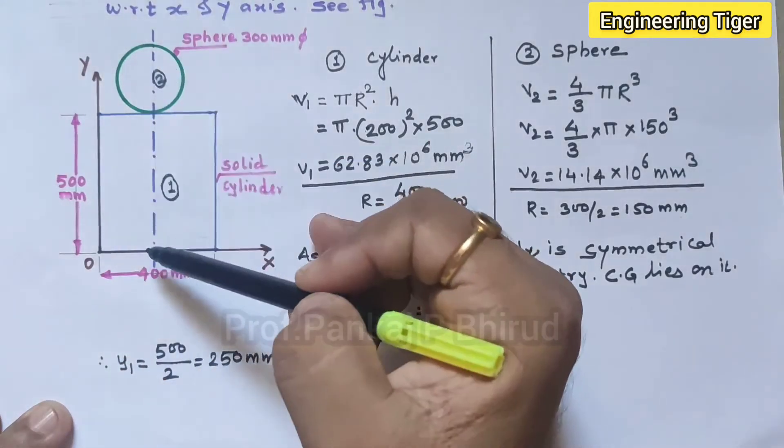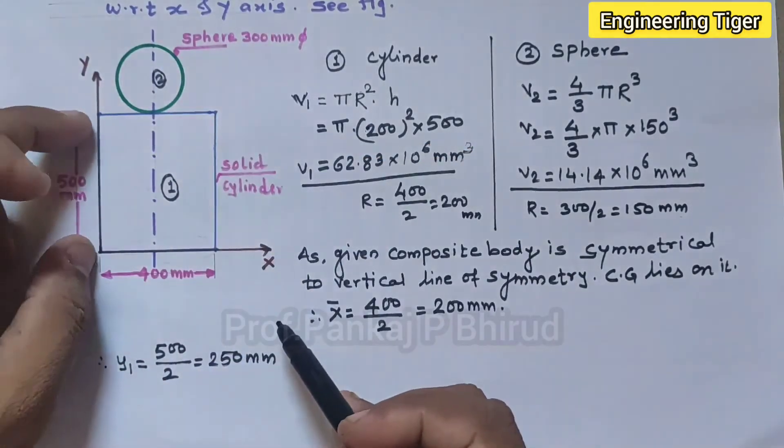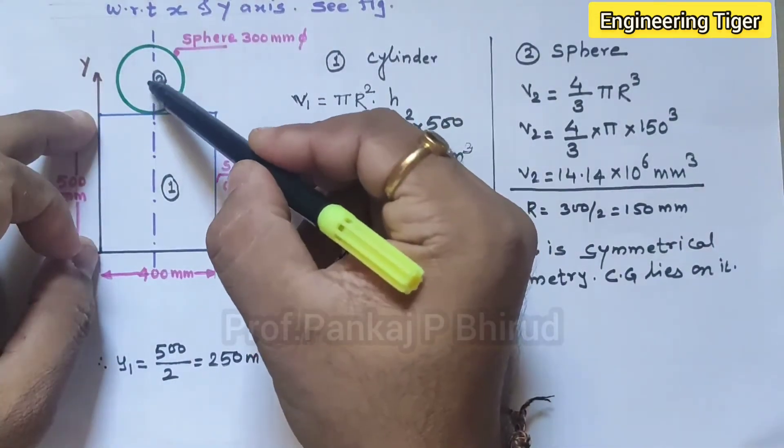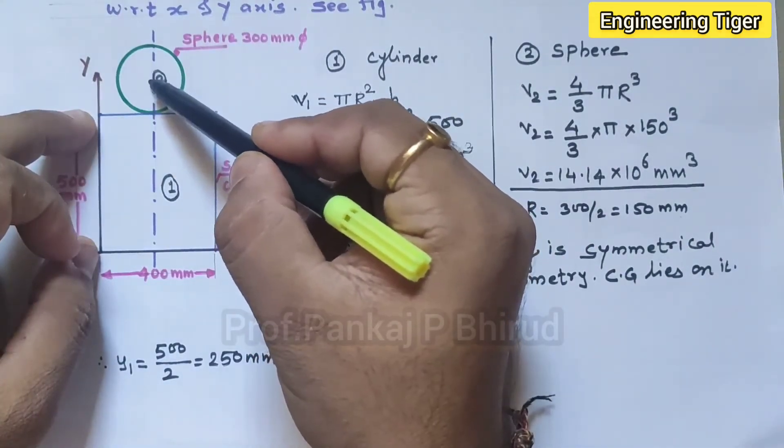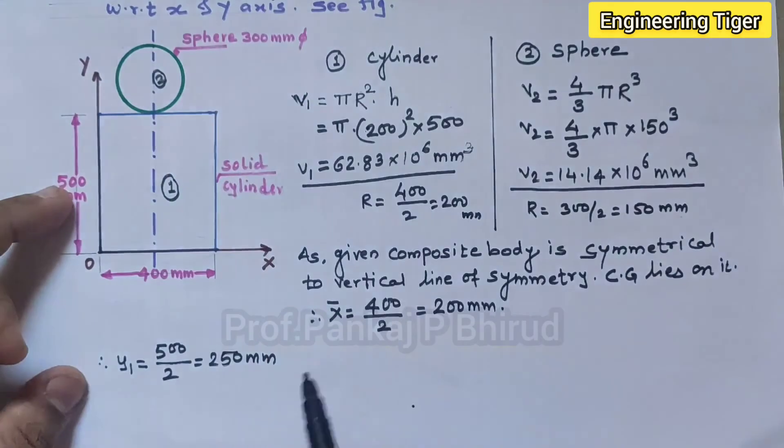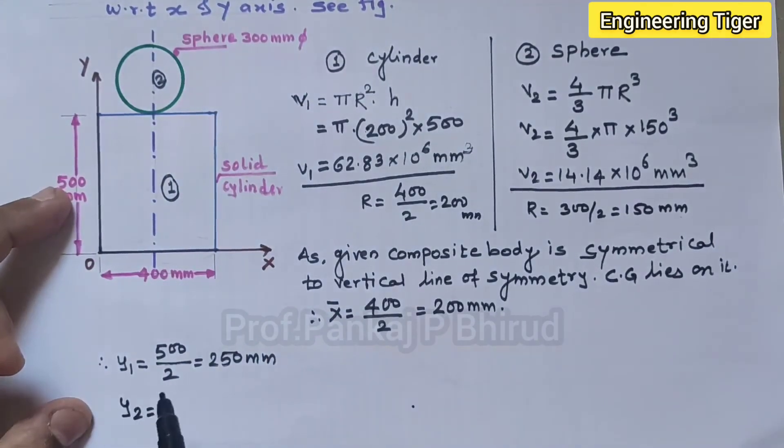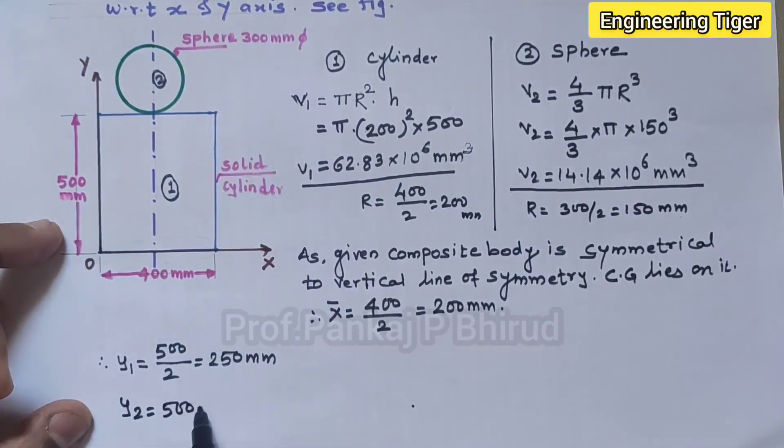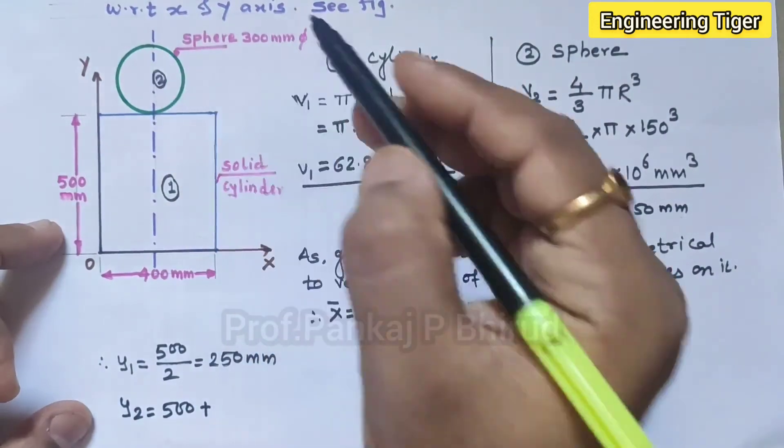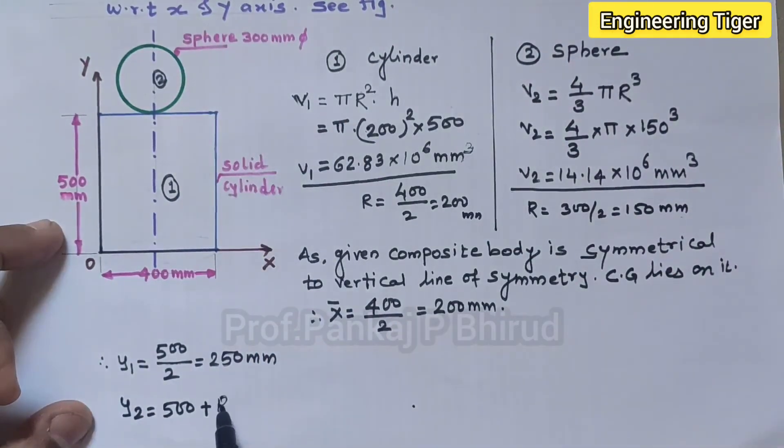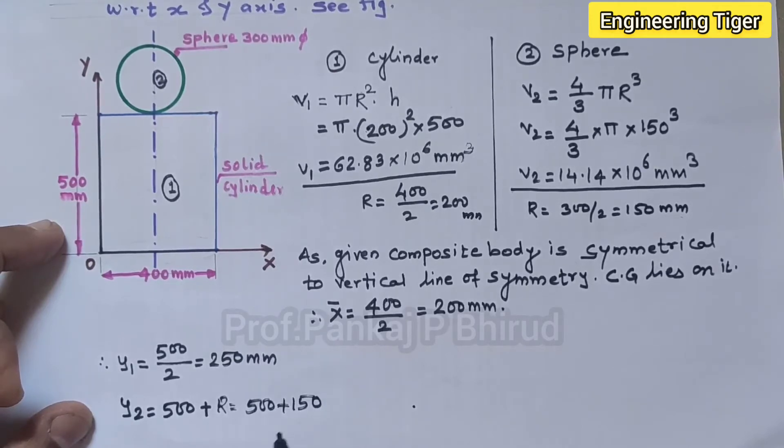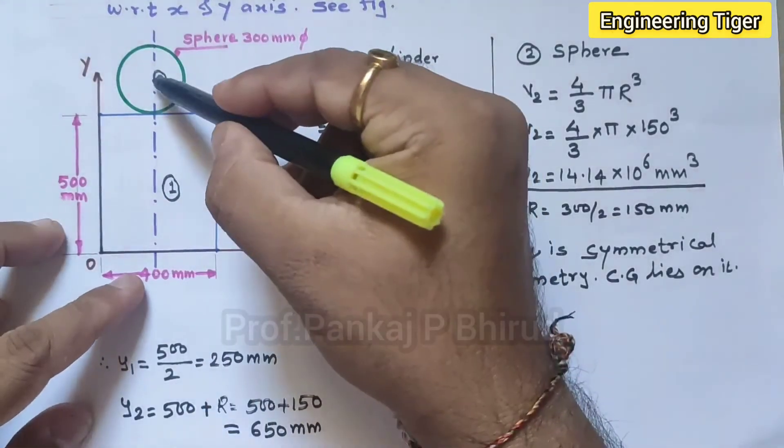Now calculate the vertical distance of CG of the sphere. This 500 is fixed. Now this CG of the sphere is at radius, so this 500 plus r. So y2 is equal to 500 plus the radius of the sphere is 150. So y2 is 650 mm. So vertical distance of CG of sphere is at 650 mm from x axis.